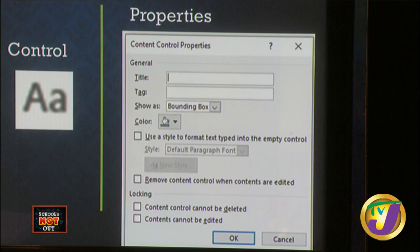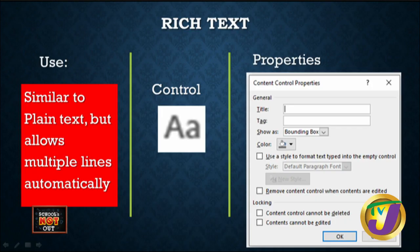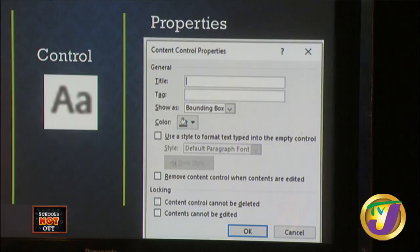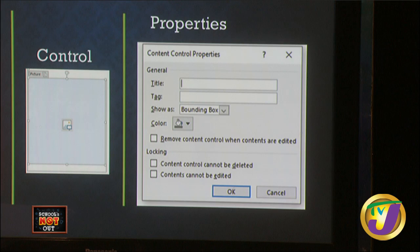Rich Text is very similar to Plain Text but with slight differences — you're automatically allowed multiple lines, and there may be additional formatting features. There's a bounding box and an option to use a style to format the text, same as with plain text, so you can actually style your font. When a person enters information it doesn't have to be the same plain text as the rest of the form — you can differentiate your part of the document from the entries. The Picture control is straightforward — it allows you to drop a picture inside your form.